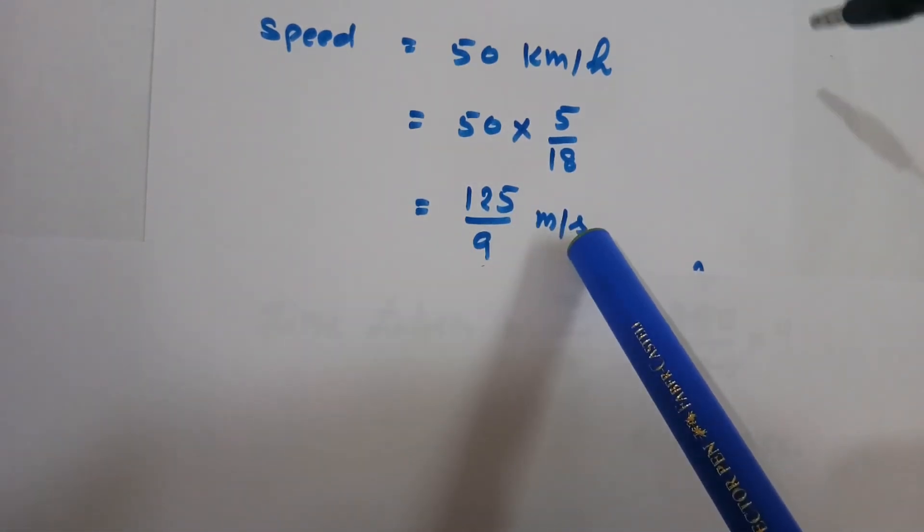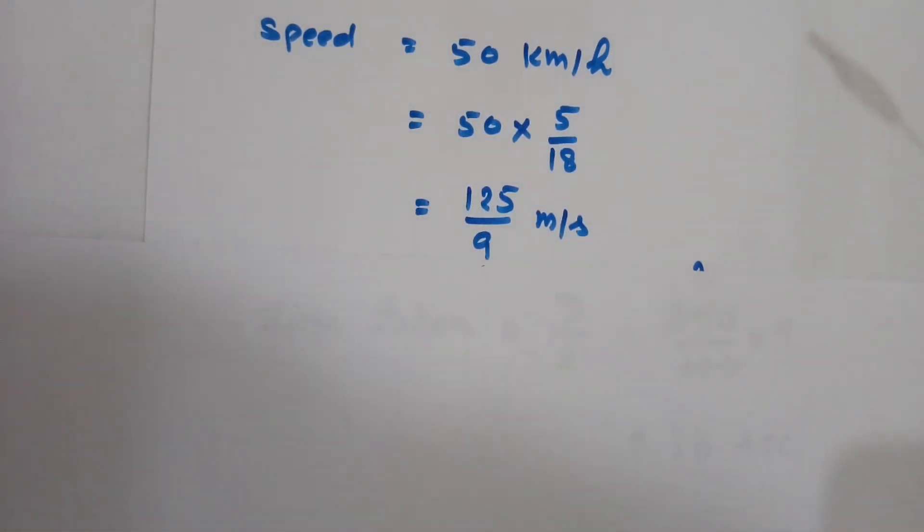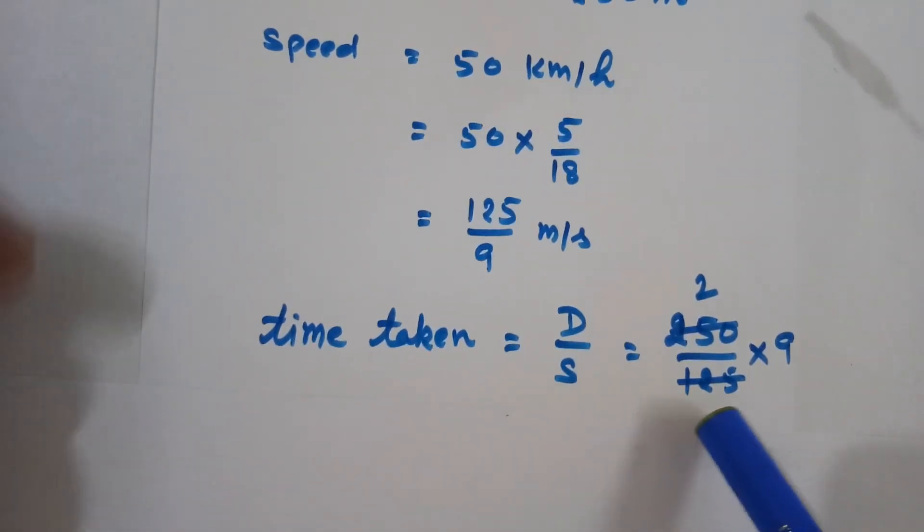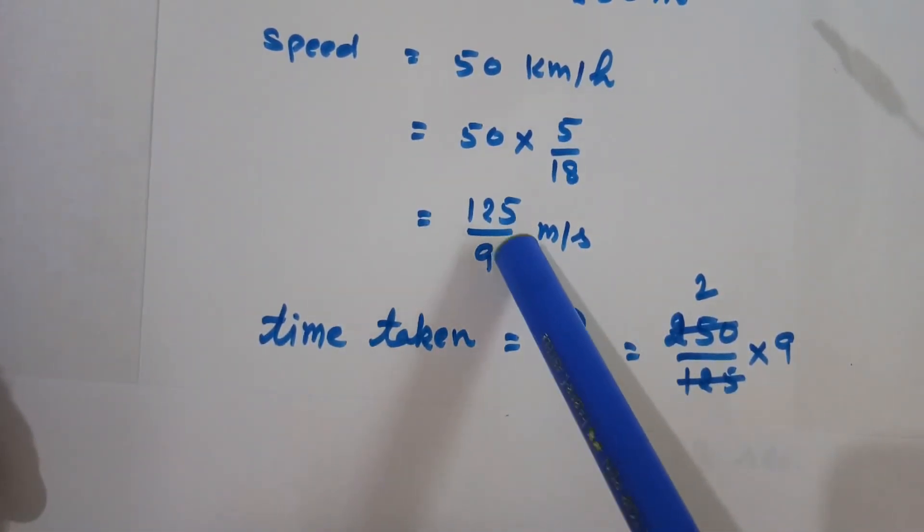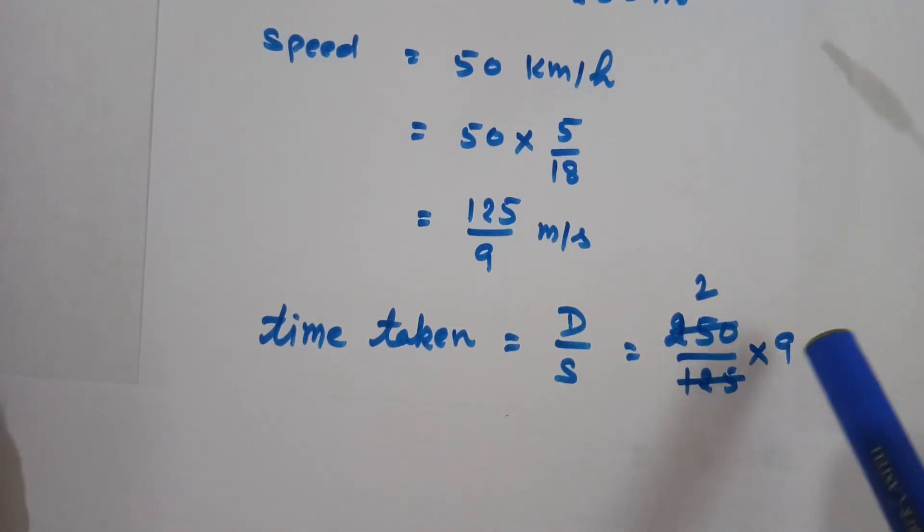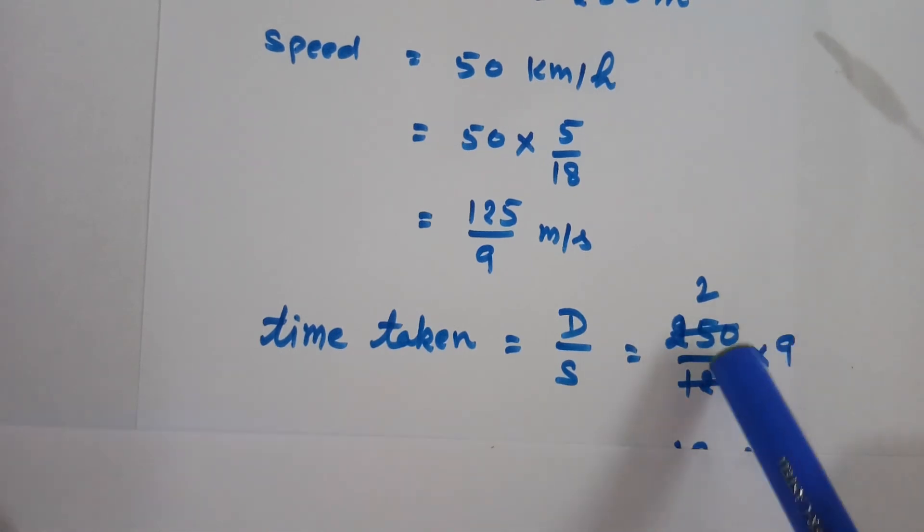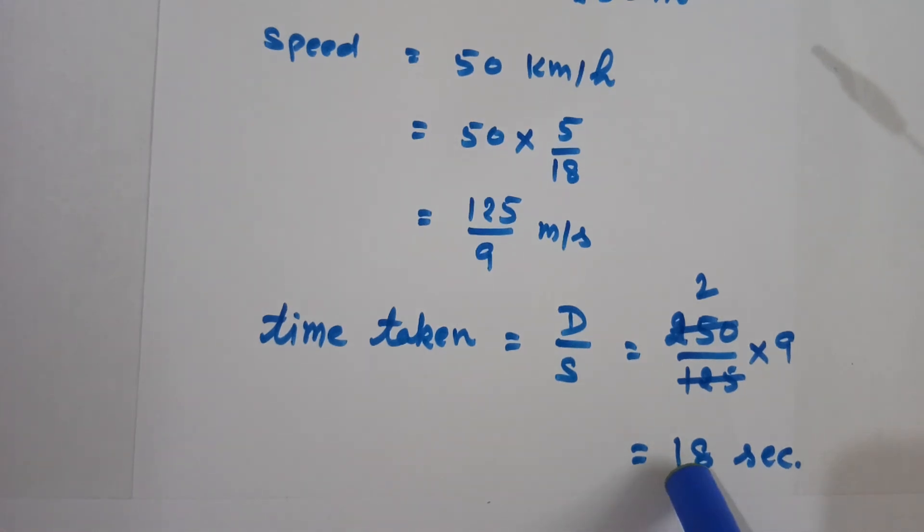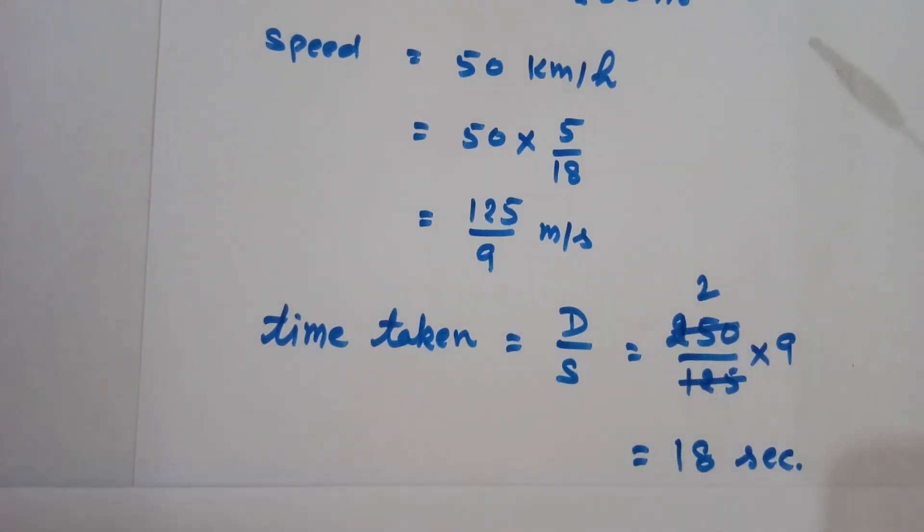Now, time taken equals distance divided by speed, so time taken is distance divided by speed. Distance is 250 meters, speed is 125/9. Because the speed is a fraction, 125 will remain in the denominator and 9 will go in the numerator. So 125 times 2 is 250, so we have 2 times 9, which is 18. 18 seconds is the time taken by the train to cross this platform.